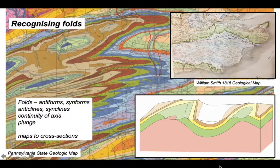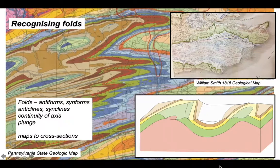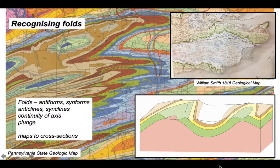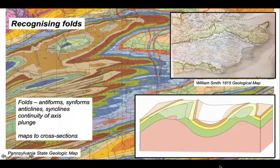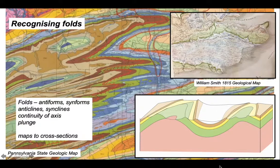So we've got some tools now for recognizing folds and understanding their geometry from their map pattern. So we've looked at antiforms and synforms. And in the examples here, the rocks are the right way up. So the antiforms are also anticlines. The synforms are also synclines. We've looked at tracking the continuity of fold axes. In that example, we've just looked at in the northern part of the Pennsylvania map. And we've seen that we can identify the plunge direction from the outcrop pattern. So we can move between maps and cross sections and build up from a two-dimensional representation, the map to a three-dimensional understanding of the geological structure.